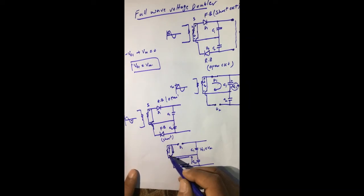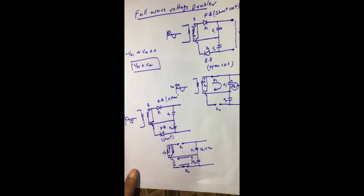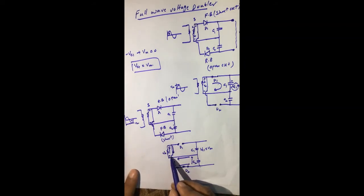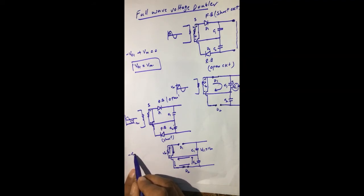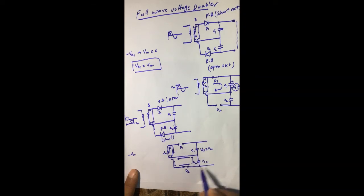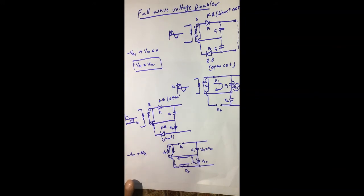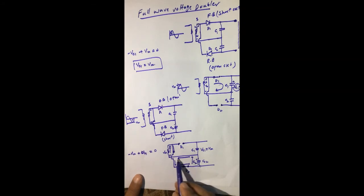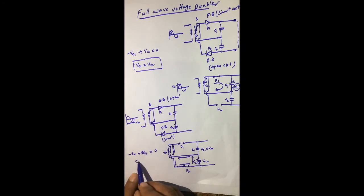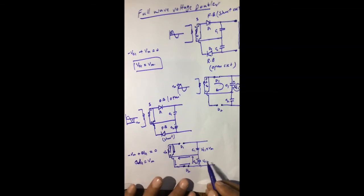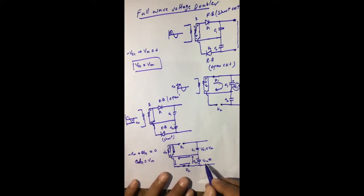Applying Kirchhoff's voltage law to this loop: starting from the positive terminal we have the maximum voltage Vm, moving from positive to negative gives minus Vm. Then across C2, moving from negative to positive gives plus VC2, and minus VC1 equals zero. Solving this gives VC2 = Vm, so capacitor C2 also charges to its maximum value with voltage VC2 = Vm.